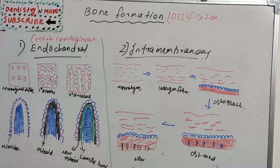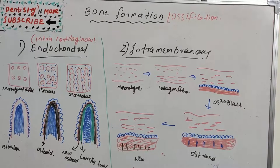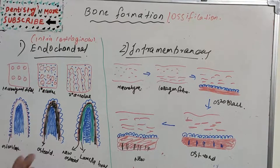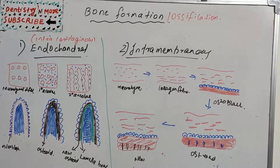Hello everyone, welcome back to another session in Dentistry and More. Today's topic is bone formation or ossification. We know bone formation happens in the very early years of life. Bone formation happens in two ways: one is the intracartilaginous way, that is endochondral, and the second one is the intramembranous way. The pattern of ossification is different in these two methods.